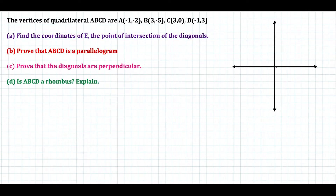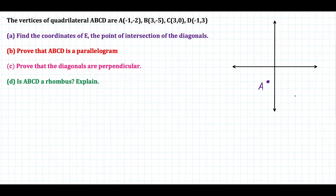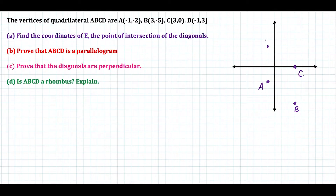So for this question, let's start by plotting these points. We have A at negative one, negative two. Then B is at three, negative five, down here in the fourth quadrant. Then C is at three, zero. And then D is at negative one, three, up here.